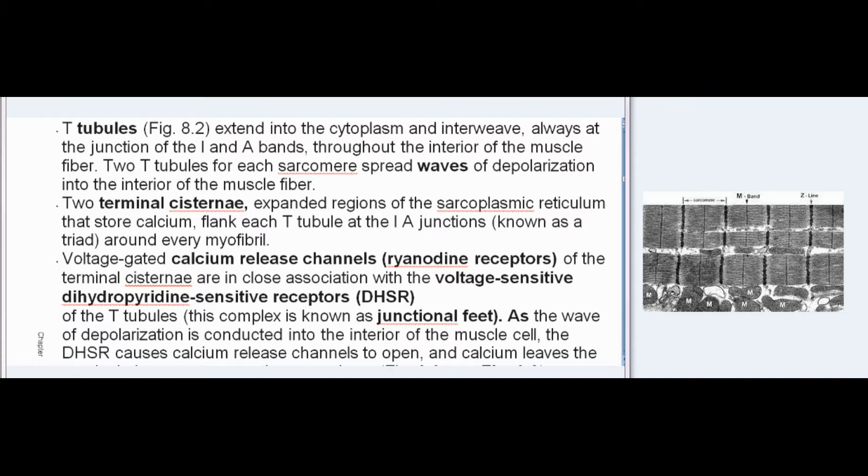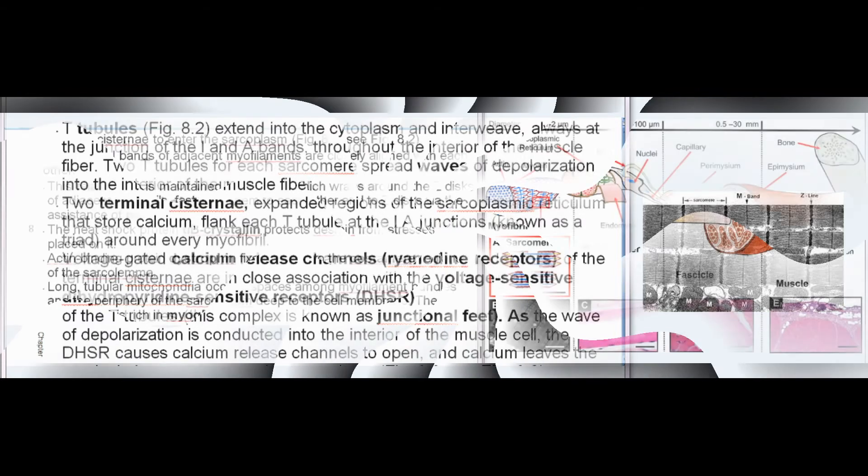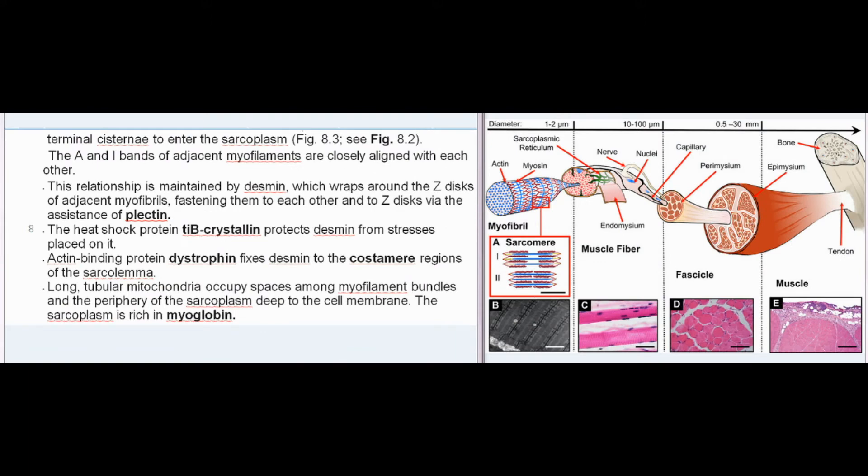As the wave of depolarization is conducted into the interior of the muscle cell, the DHSR causes calcium release channels to open, and calcium leaves the terminal cisternae to enter the sarcoplasm. The A and I bands of adjacent myofilaments are closely aligned with each other. This relationship is maintained by desmin, which wraps around the Z-discs of adjacent myofibrils, fastening them to each other and to Z-discs via the assistance of plectin. The heat-shock protein αB-crystallin protects desmin from stresses placed on it.